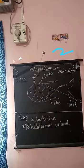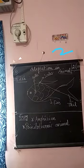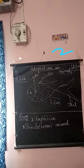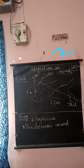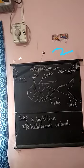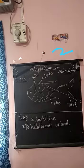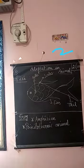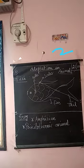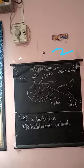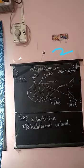Frogs are poikilothermic animals. A poikilothermic animal is one whose body temperature varies with the temperature of the surroundings. The body temperature of such animals changes depending upon the temperature of the surroundings. So the frog is a poikilothermic animal.